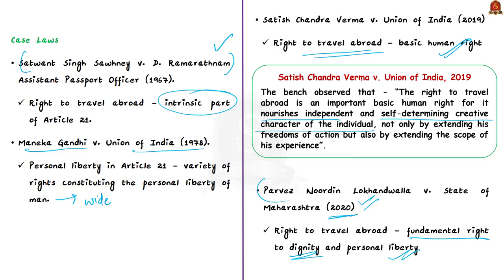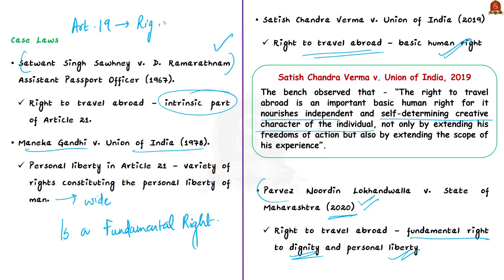These four case laws confirm that the Supreme Court has consistently held the right to travel abroad as a fundamental right. Importantly, the right to move freely within India is a separate right under Article 19, while the right to travel abroad is derived from Article 21 — the right to life and personal liberty. Do not confuse these two.